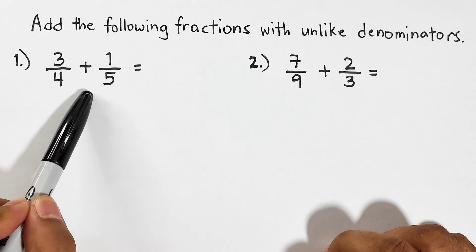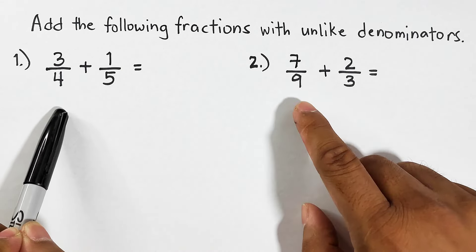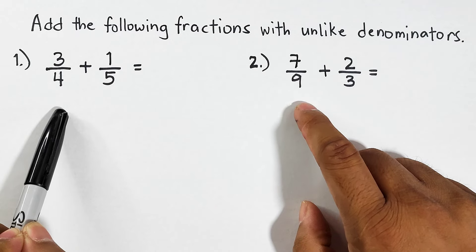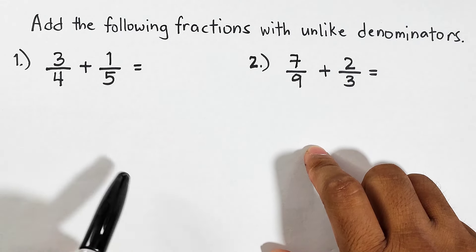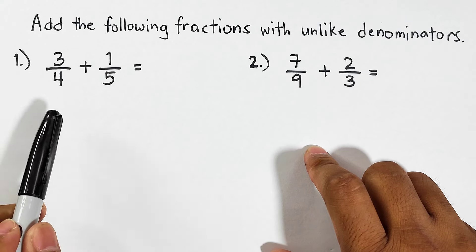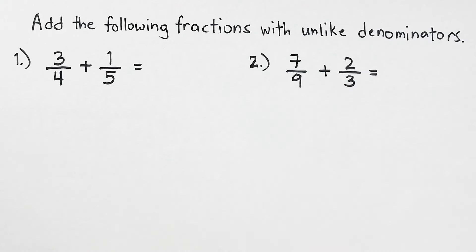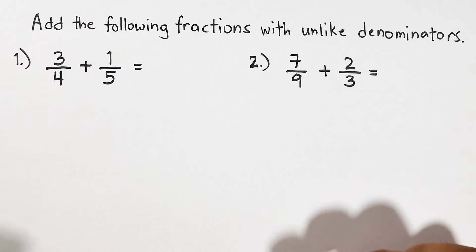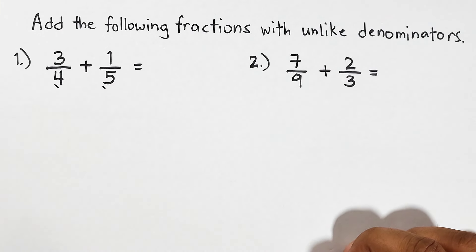These fractions have different denominators, as well as in example number two. So what we need to do is first make these denominators the same or common. To do that, we need to find the least common multiple between four and five.